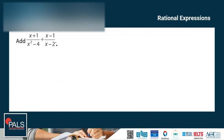When two rational expressions do not share the same denominator, you will need to find the common denominator. One trick is to first check if one of the denominators is a factor of the other. If so, the larger expression is the common denominator. If not, you can always multiply the two expressions to find a common denominator.